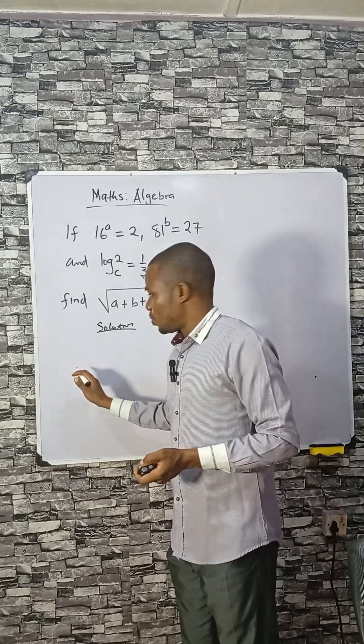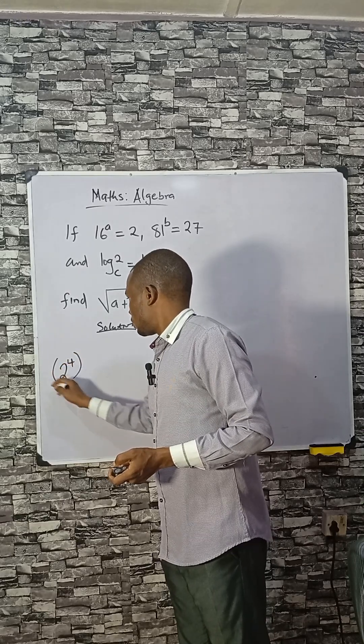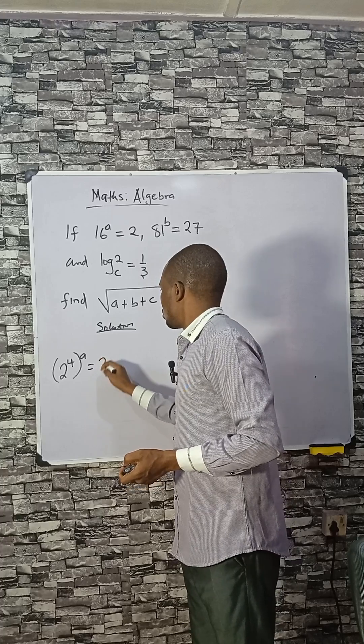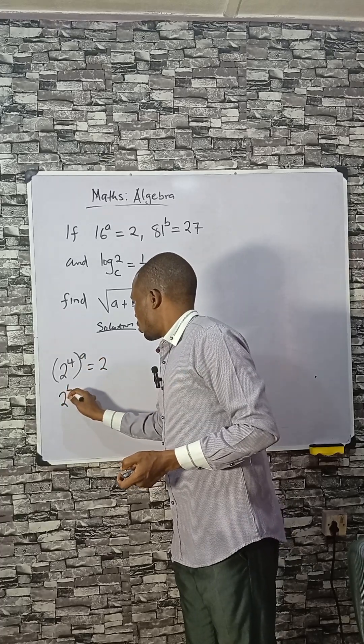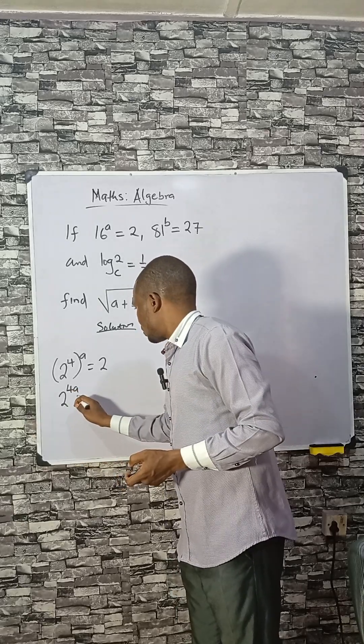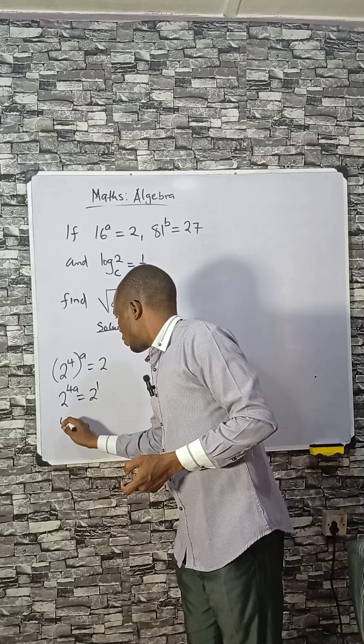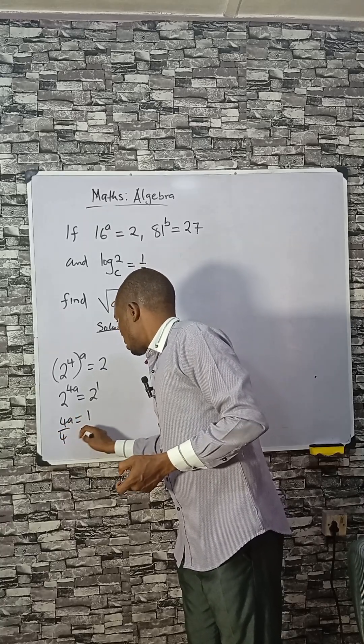Solution: Let's work with each of them. 16 is 2 raised to power 4, then raised to power a, still equals 2. Now 4 times a, that's 4a, because the powers multiply themselves. Having the same base with the powers, 4a equals 1, so divide by 4 to make a stand alone. a equals 1 over 4.